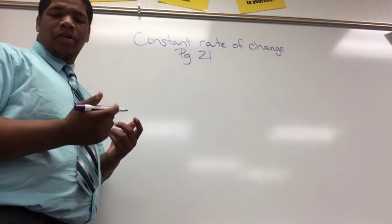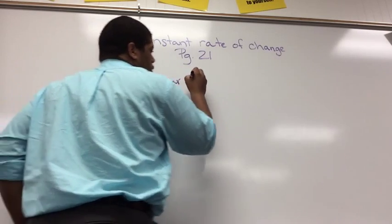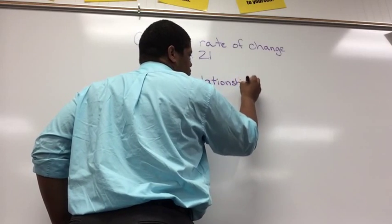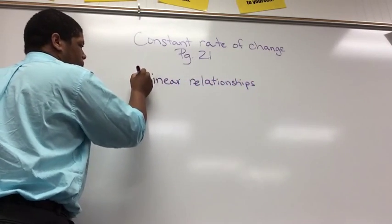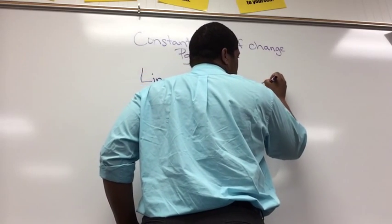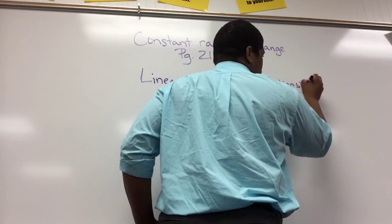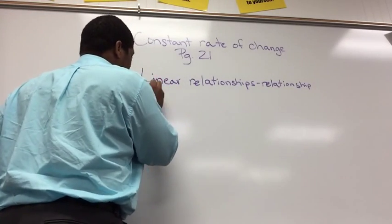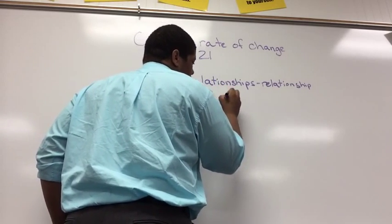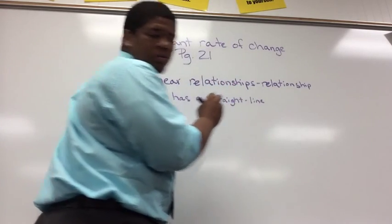So first we're going to start off with some vocabulary words. The first one is linear relationships. Okay, and a linear relationship is a relationship that has a straight line graph.